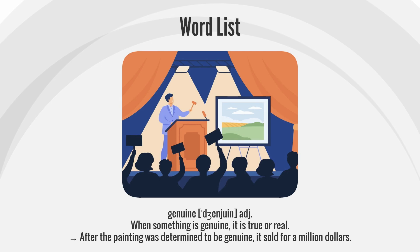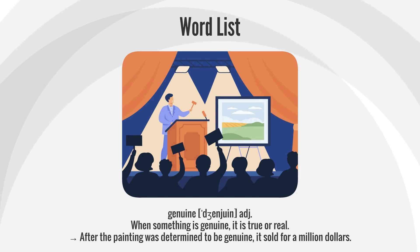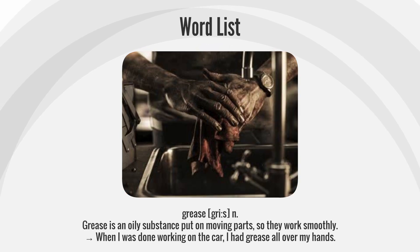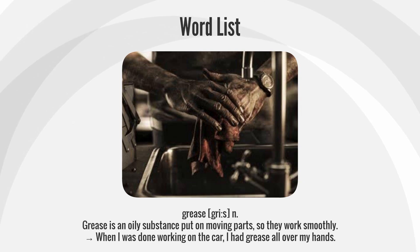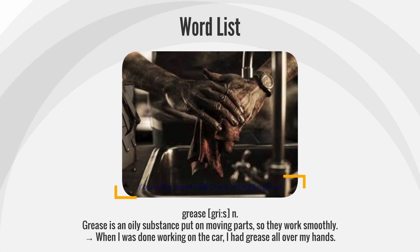Genuine — when something is genuine, it is true or real. After the painting was determined to be genuine, it sold for a million dollars. Grease — grease is an oily substance put on moving parts so they work smoothly. When I was done working on the car, I had grease all over my hands.